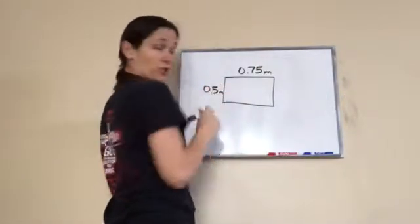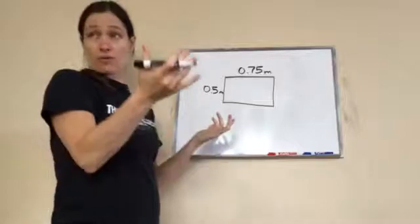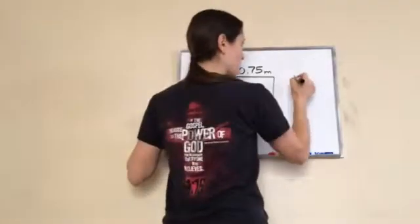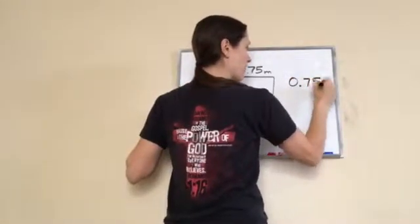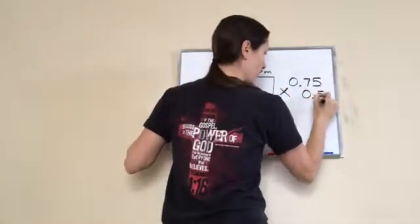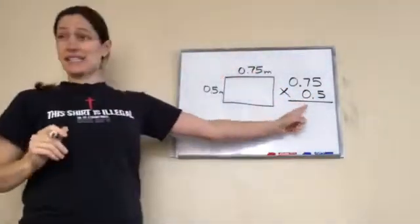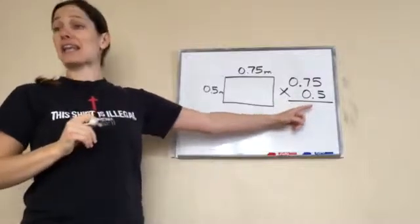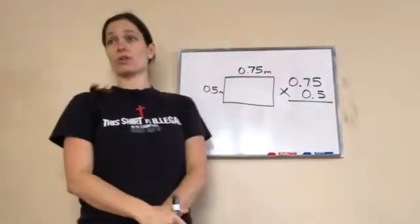You have to multiply those, so watch what I do. 0.75 times 0.5. Now how is this different than adding decimal numbers? The decimals are not lined up.